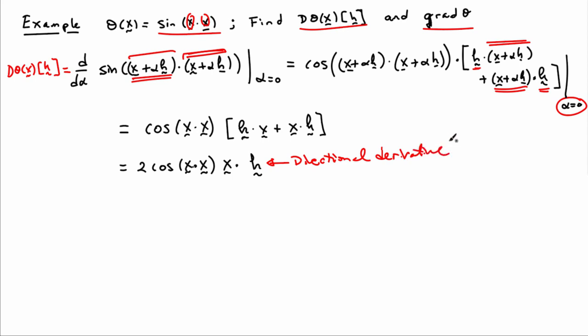And you can see we can isolate the part that doesn't involve h and that will be the gradient. So this very first part, two cosine of x dot x times x, that's the gradient of theta. And so you notice that I have a scalar function theta. And the gradient of theta, that's a vector. So we have a number here, two cosine, and then it's multiplying into x. So we're going to get a vector for the gradient.